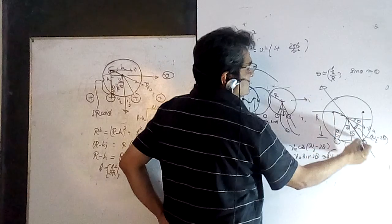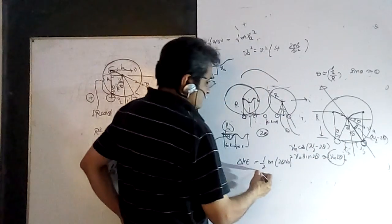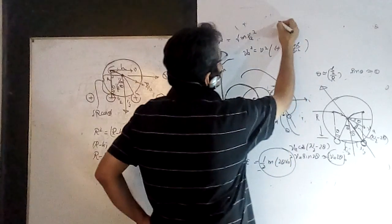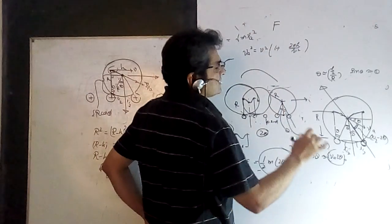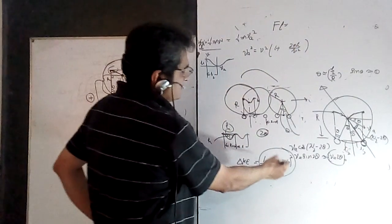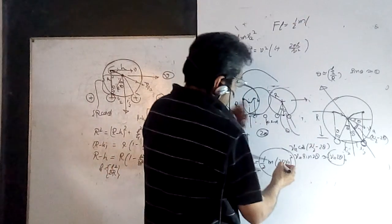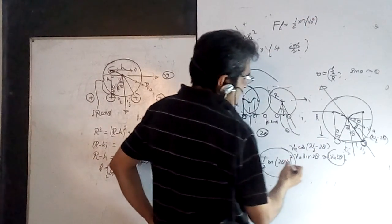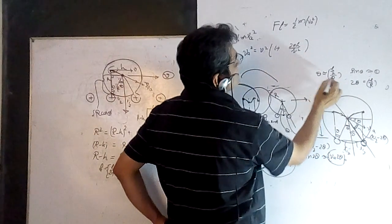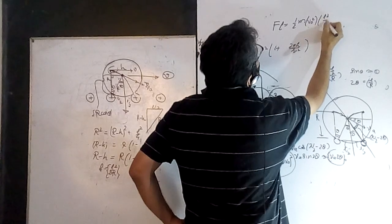Ideally without energy loss the cylinder would rebound and return to the same height, but since energy is lost, I must provide that energy externally each cycle. If F is the applied force and L is the cycle distance, then F·L = ½M·V_a²·(2theta)². Since twice theta equals L/R (because theta = L/2R), we have (2theta)² = L²/R².